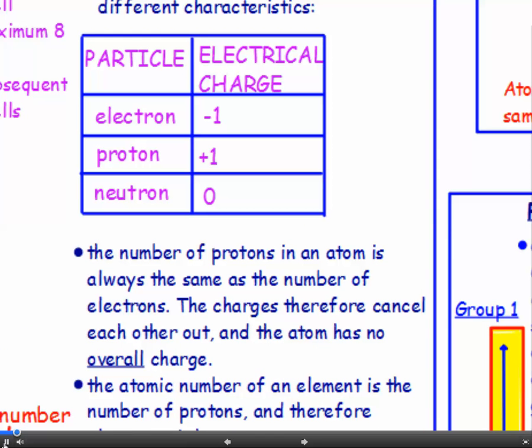Now, these subatomic particles have different characteristics. They have different electrical charges. An electron has an electrical charge of minus one. It's negative, with a value of one. Protons have a positive electrical charge, plus one.